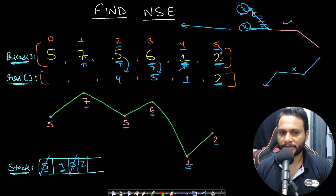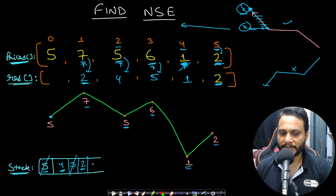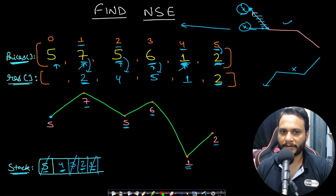For index 0 (value 5): check stack top index 1 (value 7) — 7 is not ≤ 5, so pop it. Check index 2 (value 5) — yes, 5 ≤ 5. Discount = 5, final price = 5 - 5 = 0. Push index 0. The stack maintains a non-decreasing ordering. This is called a monotonic stack — it maintains strict or non-strict ordering (strictly increasing, strictly decreasing, non-increasing, or non-decreasing).